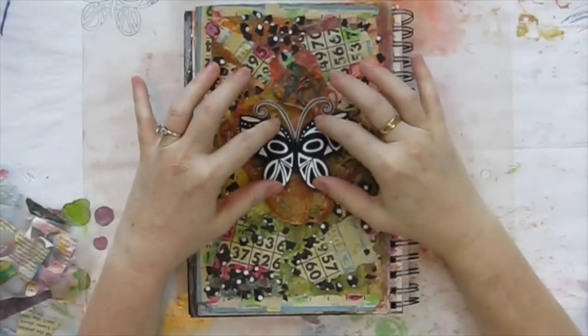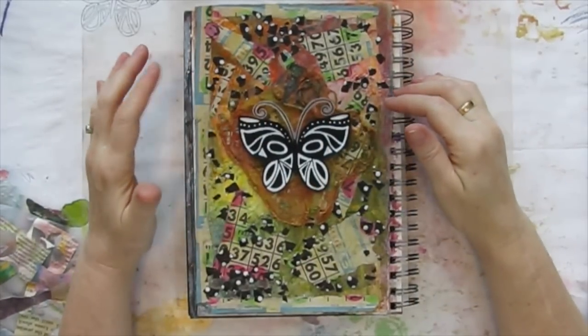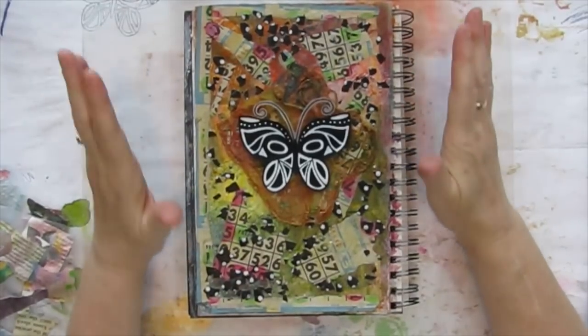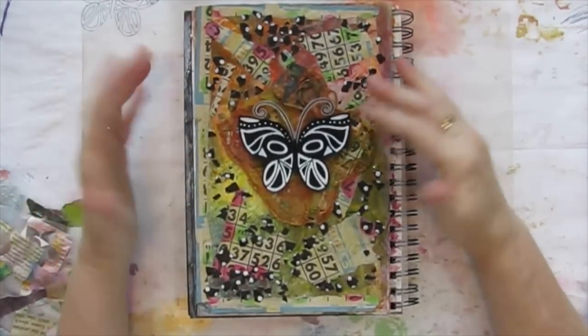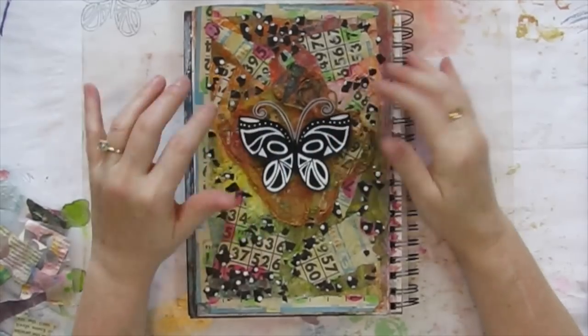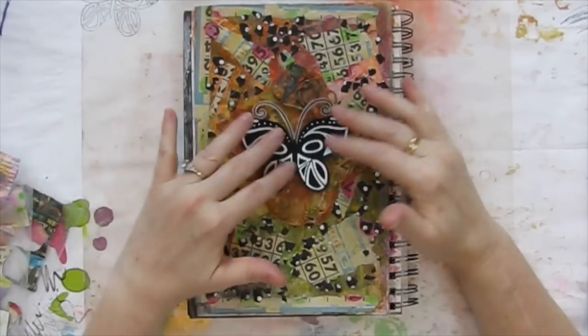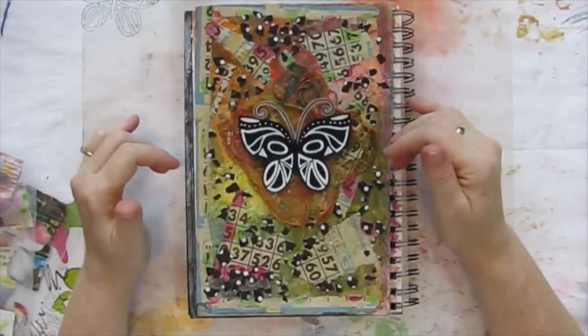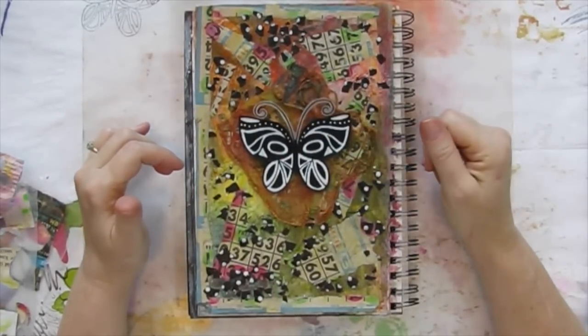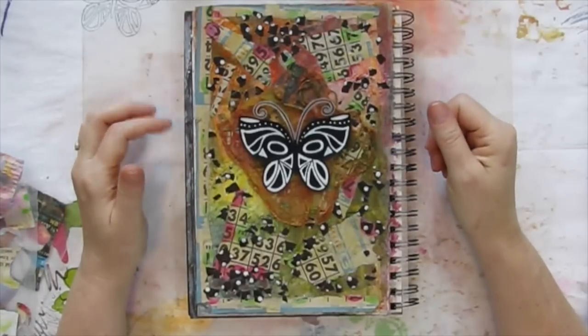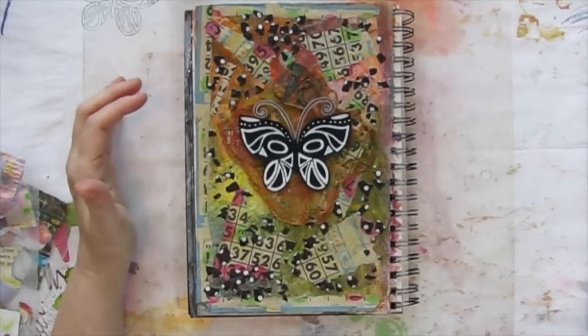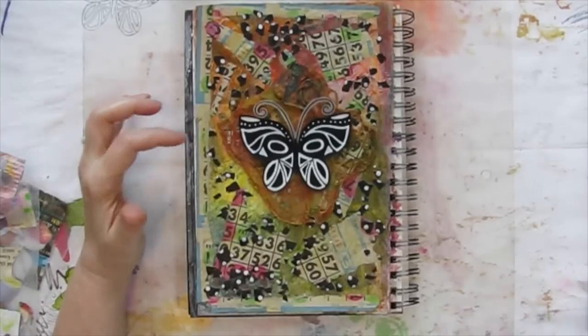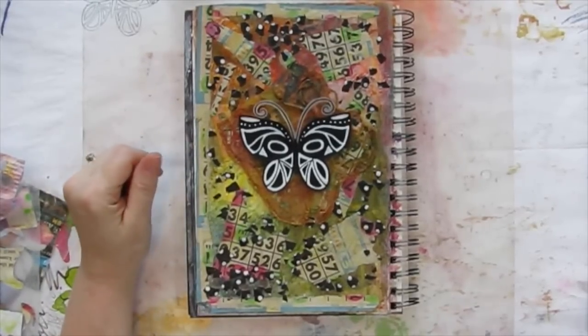So I stamped the butterfly. I still don't know why I stamped it on vellum. I assume it's because the vellum was there staring at me. I stamped it embossed with black embossing powder on the vellum, knowing all along that I wanted it to be black and white. Now why I didn't stamp it on white paper so that I could just color the black areas, I will never know, but I did it on stupid vellum, which means I had to color not only the black but the white using cereal bags.